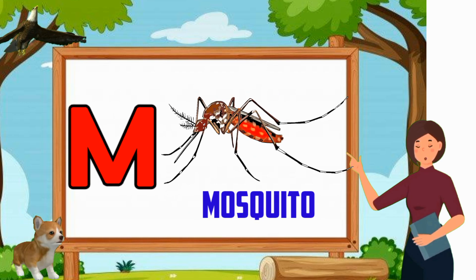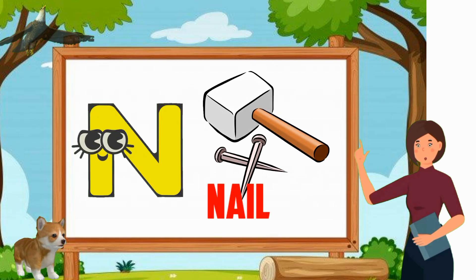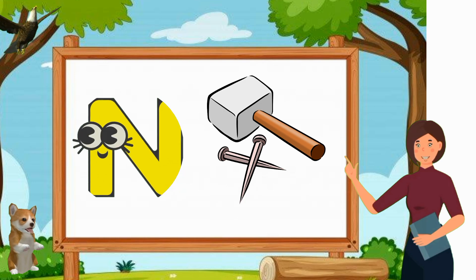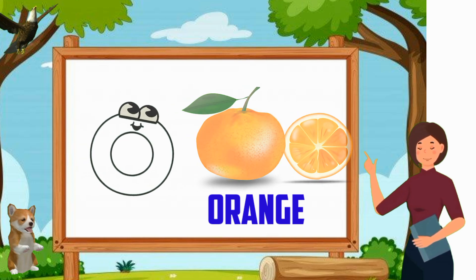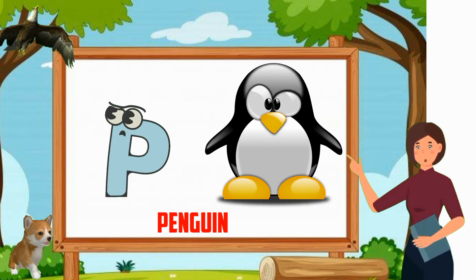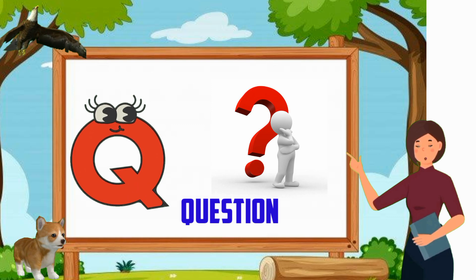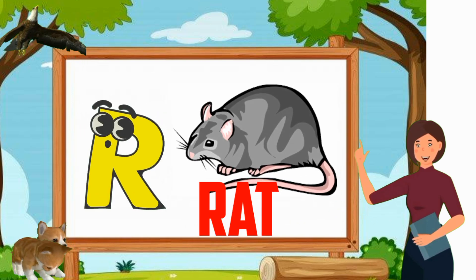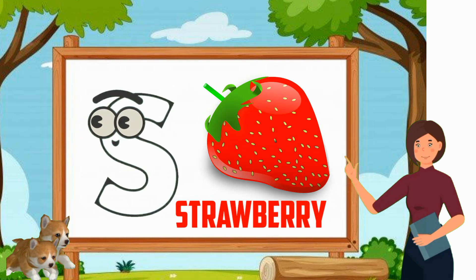M for mosquito. N for nail. O for orange. B for penguin. Q for question. R for rat. S for strawberry.